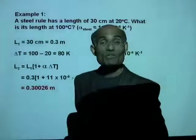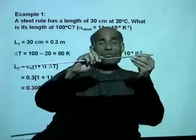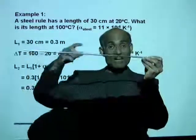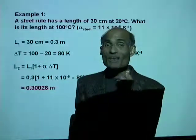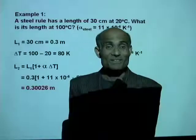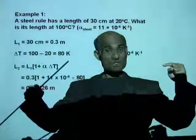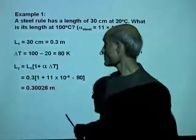That should give you 0.30026 meter is the length of that steel rule at that high temperature. That means, if you use a steel rule for measuring length, as the temperature increases, the length measured will not be accurate. Because the length of the ruler changes.